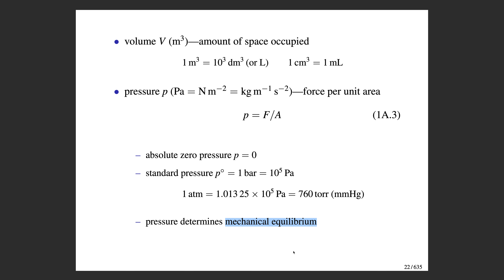If the two pressures are not the same — if the gas pressure is either larger or smaller than the external pressure — the system is not in mechanical equilibrium with its surroundings. The piston will move until the external pressure equals the internal pressure of the gas.